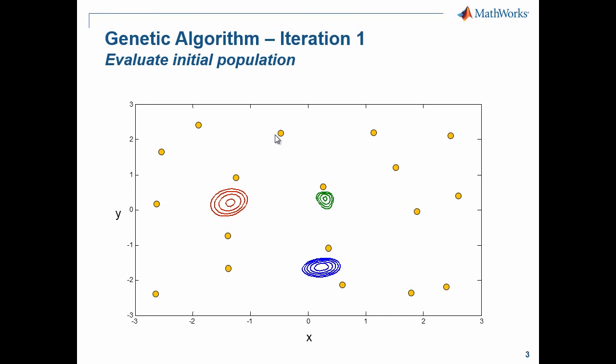The first step that the genetic algorithm does is it evaluates all these points and determines the fitness function value for each one of them. The next thing that it'll do is it'll select a few good solutions as the parents to continue on to the next generation. These green points here did well. We'll keep those for the next generation, and we'll also use them to create the subsequent generation.